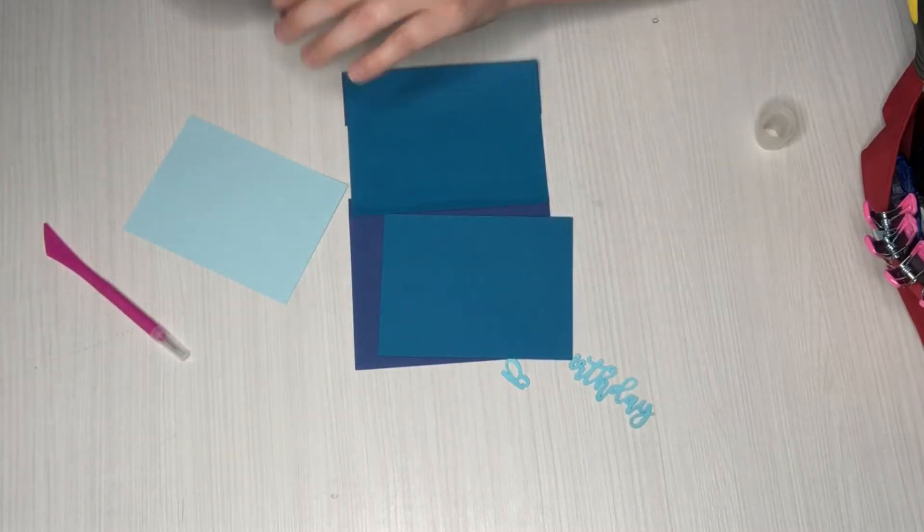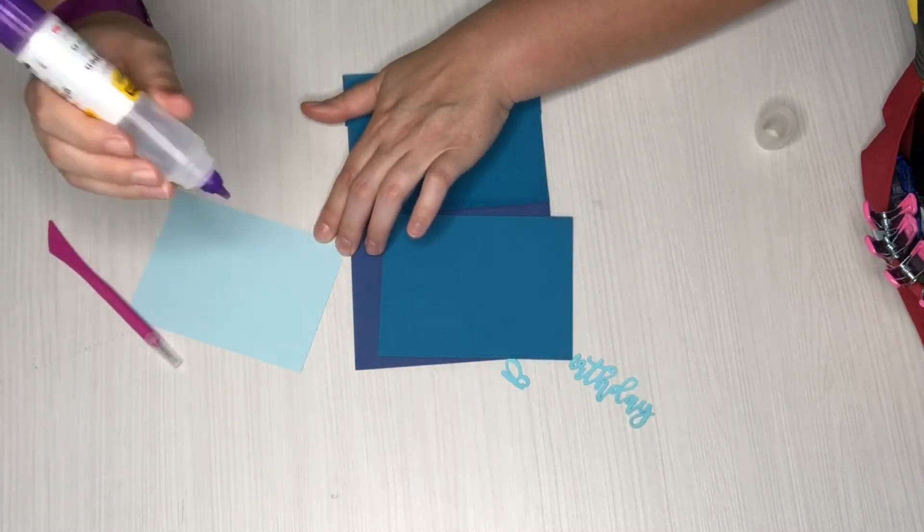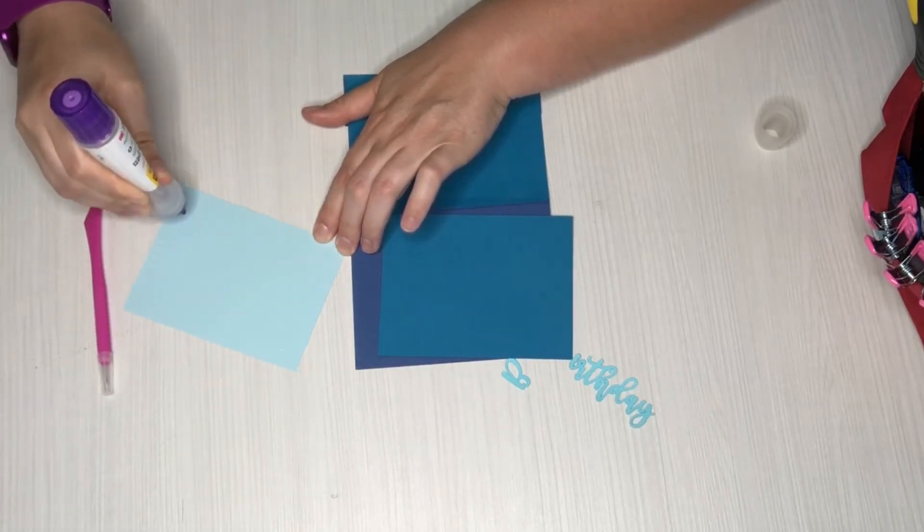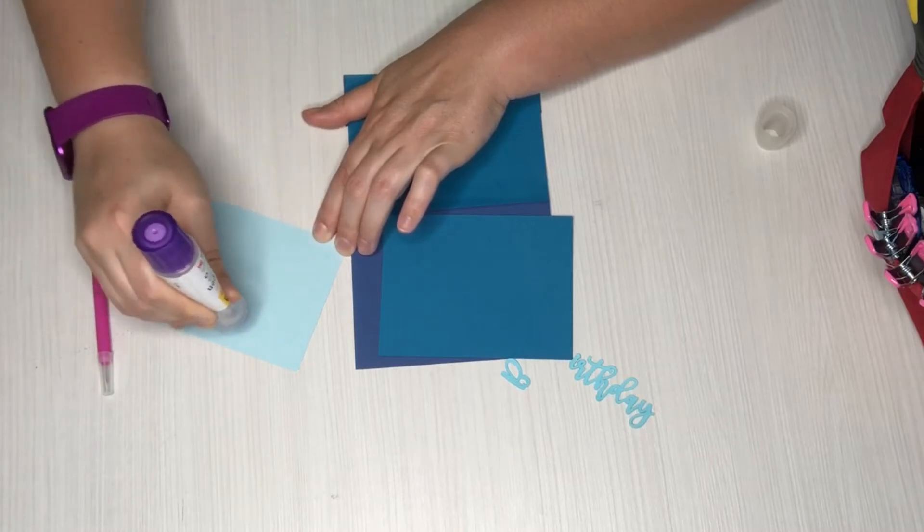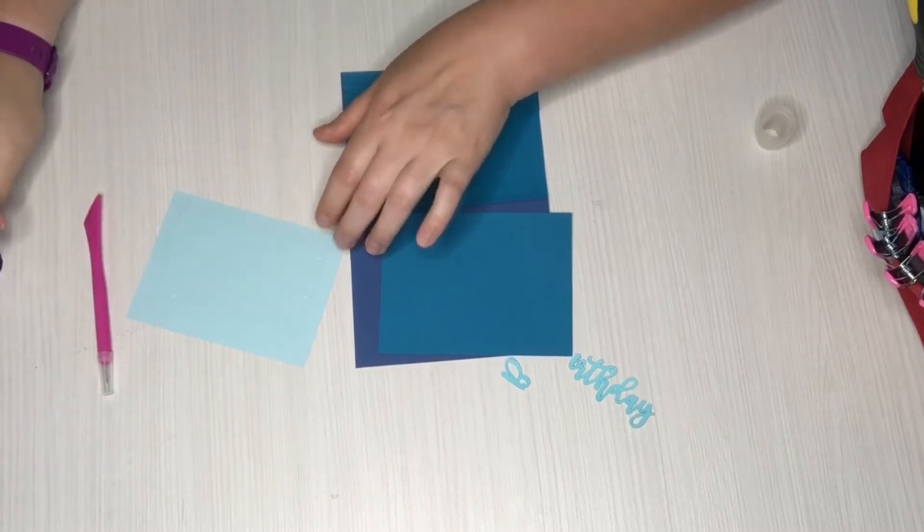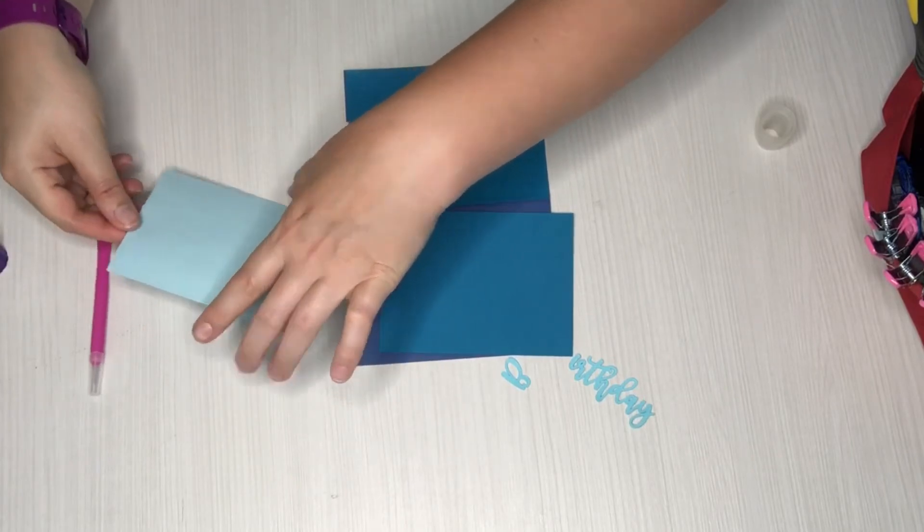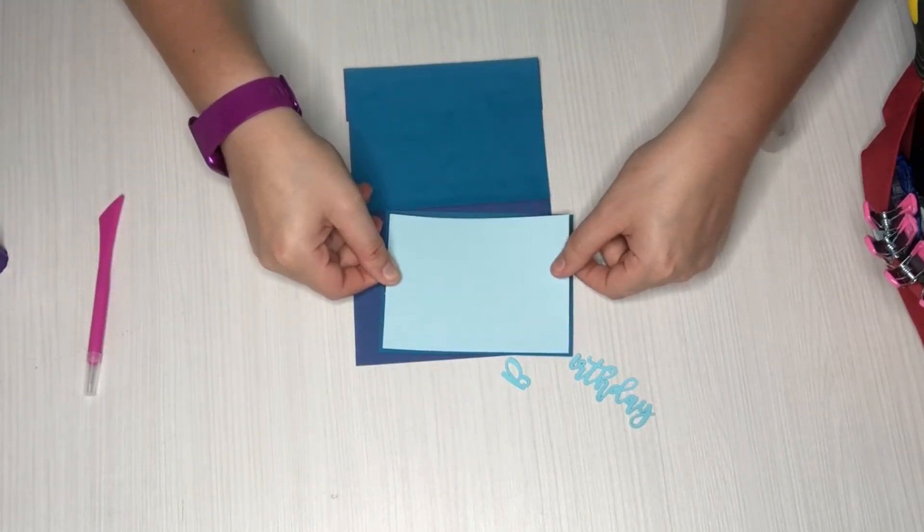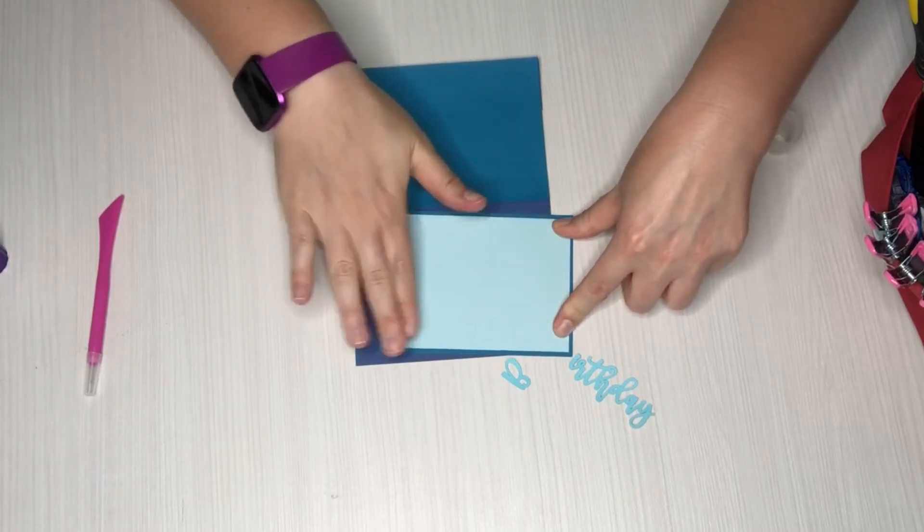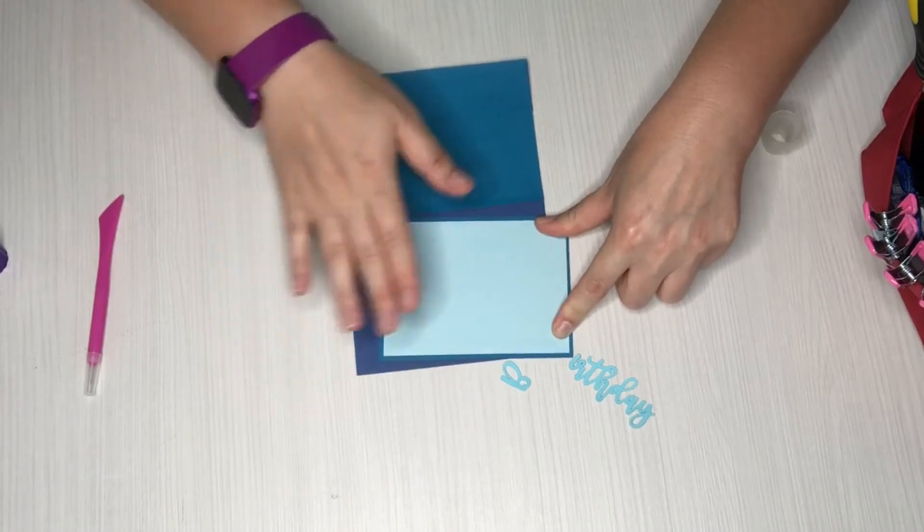So I'm just gonna put a little bit of glue on this sentiment layer. For this you could do a sketch, you could do a printing cut, or you can stamp something or just write something by hand. Any of those options will work and I'm just gonna center it on this other layer.